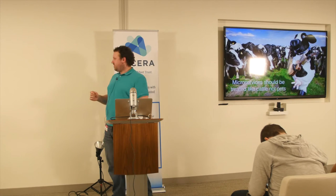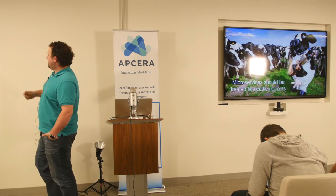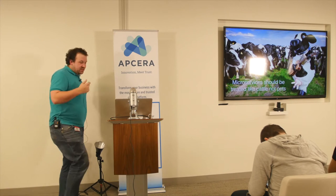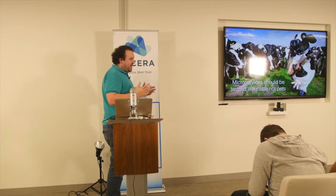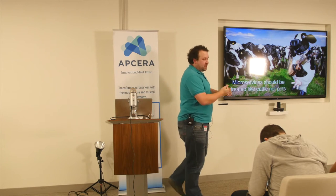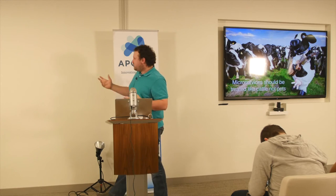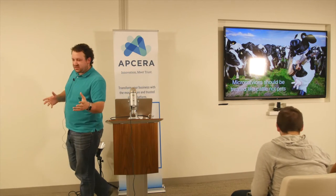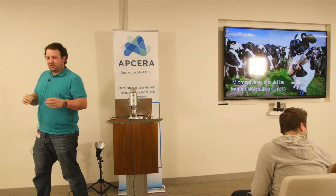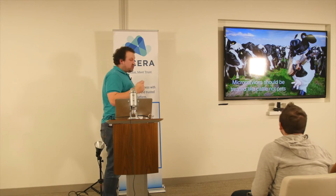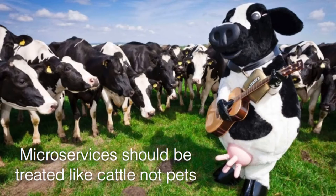You should be treating your microservices as cattle. You shouldn't really care about each individual replica. When you use Swarm or Kubernetes, you don't care where your replicas get run — you just care that they get run on the cluster. Similarly with monitoring, you shouldn't care about the health of an individual replica; you need to care about the health of the service as a whole.